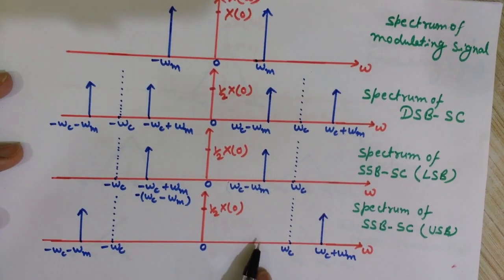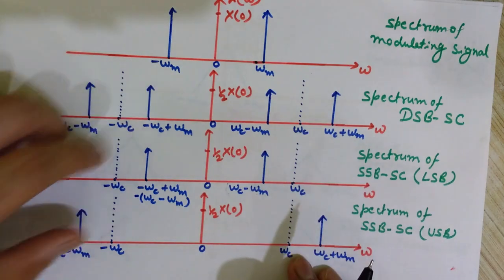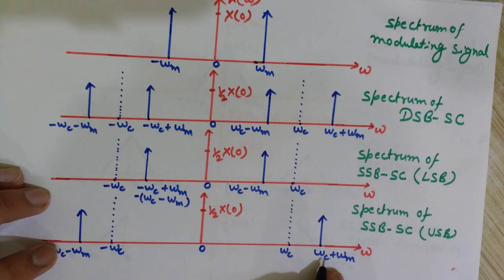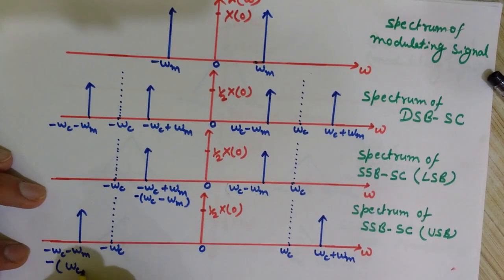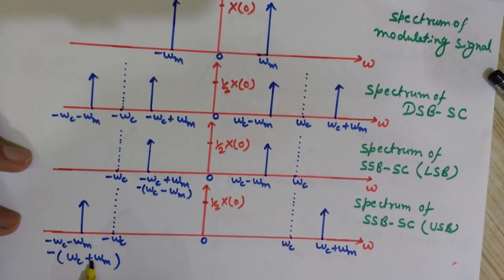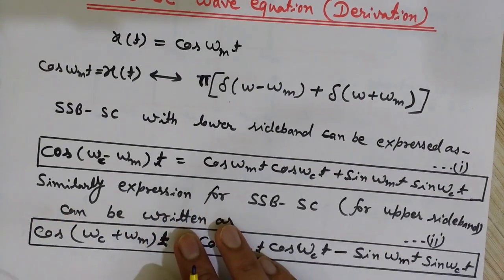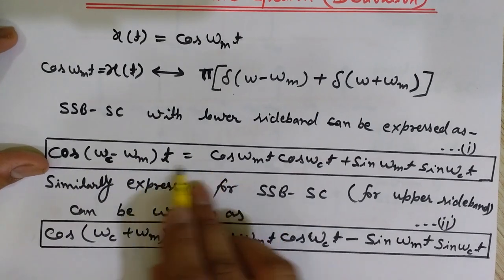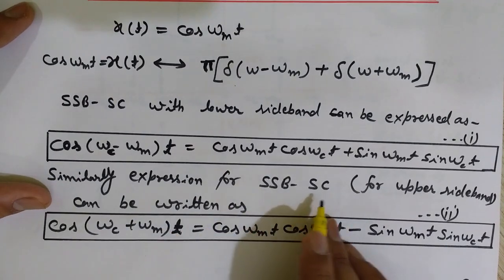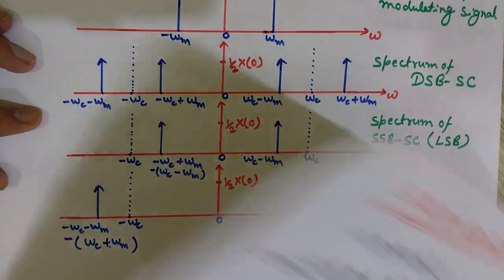By the same symmetry reasoning, the upper sideband spectrum has impulses at +(ωc + ωm) and −(ωc + ωm). So the SSB-SC equation for the upper sideband is cos[(ωc + ωm)·t]. We now have equations for both: lower sideband = cos[(ωc − ωm)·t], upper sideband = cos[(ωc + ωm)·t].